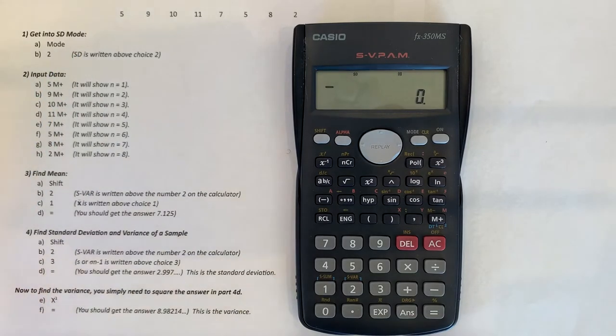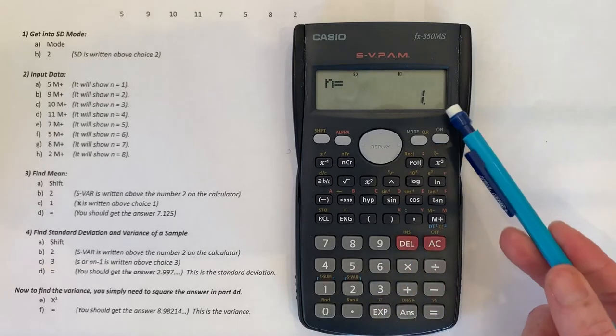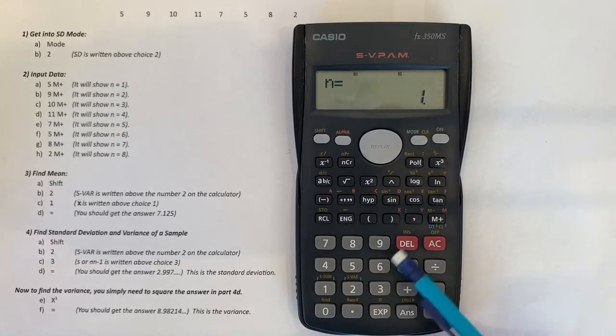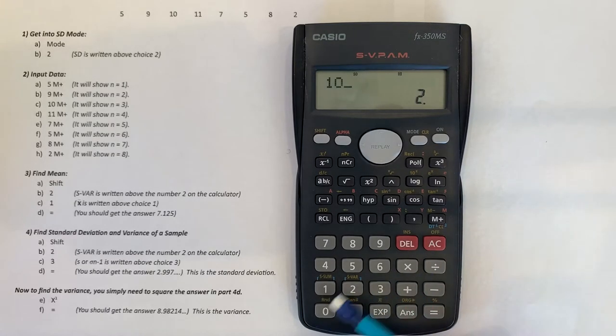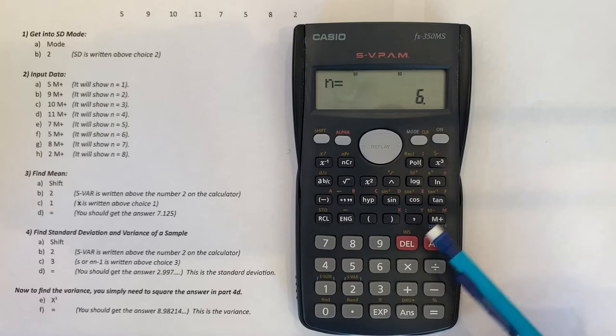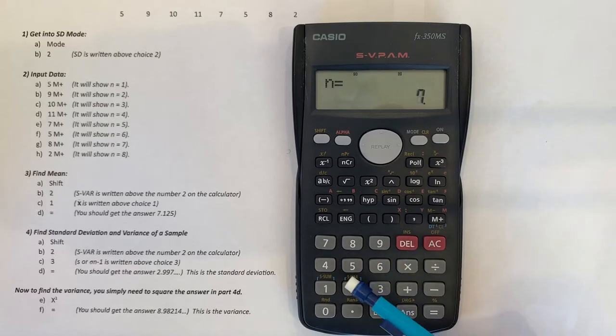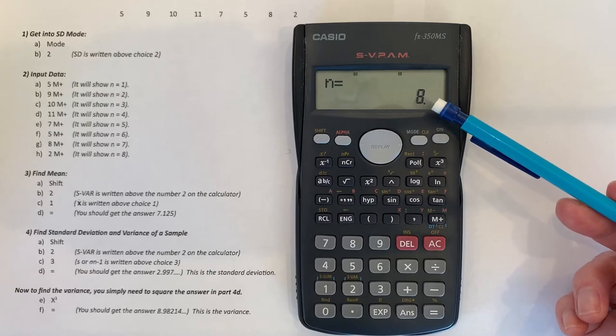So the first data value is 5 M plus. Notice it shows you have one value in so far. Next is 9 M plus. It has two data values now. 10 M plus, 11 M plus, 7 M plus, 5 M plus, 8 M plus, 2 M plus. Notice we have a total of eight values in our statistical memory.